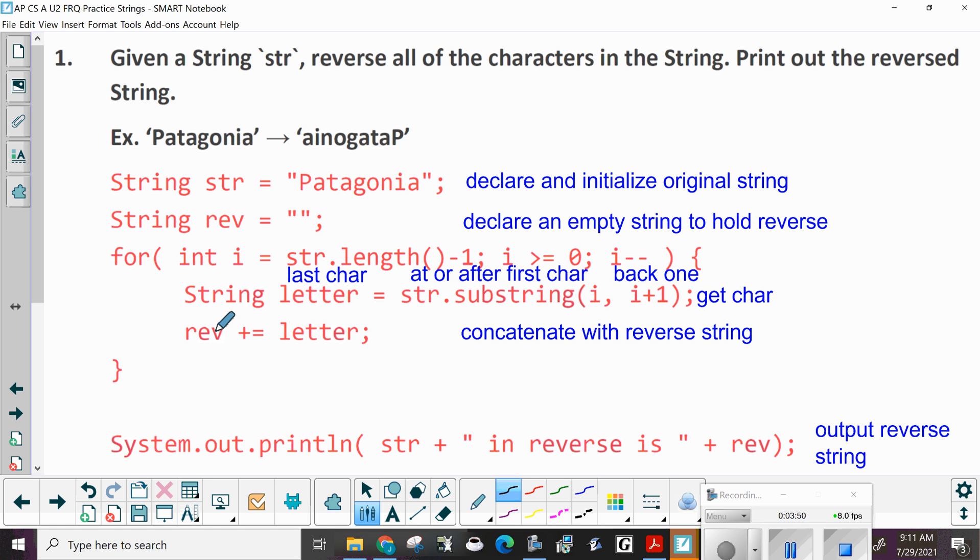So, string dot substring i to i plus one. Again, this name right here should be whatever you declared here. Get character. Then, reverse, you're going to concatenate. Remember, adding with strings concatenates that letter with reverse. You could also have written reverse or rev is set to rev plus letter. Either one is fine. Just in case you want to know what that would look like. Let's do rev is set to rev plus letter.